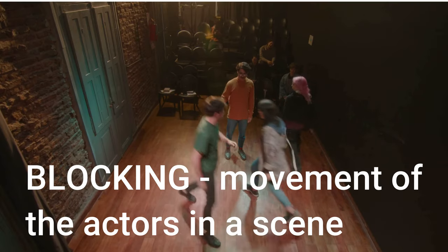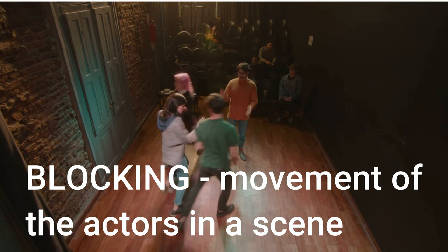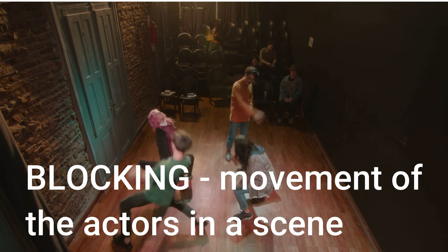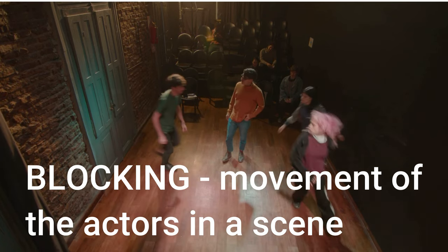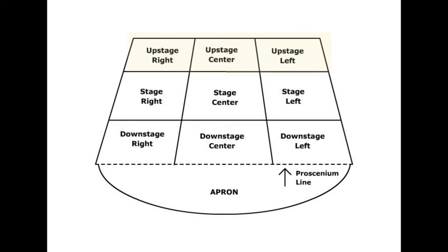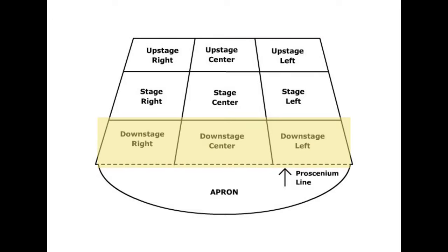Stage directions can also be there to tell a director how the scene should be blocked. Blocking is how the characters move on stage. These stage directions can indicate to the actors or the director how the characters should move upstage, downstage, left, or right stage. A typical stage will have nine areas. Those areas are defined by upstage, which is the part of the stage that's furthest away from the audience. You have downstage, which is the part that is closest to the audience.